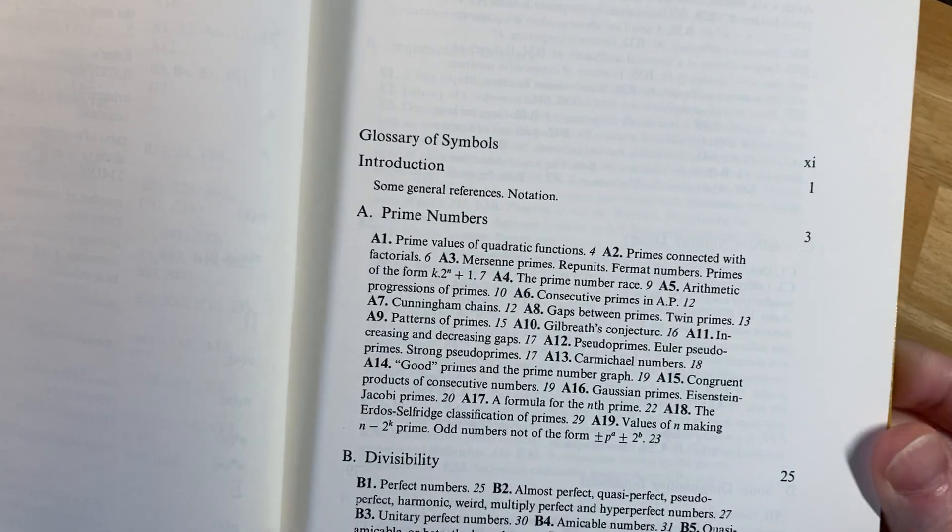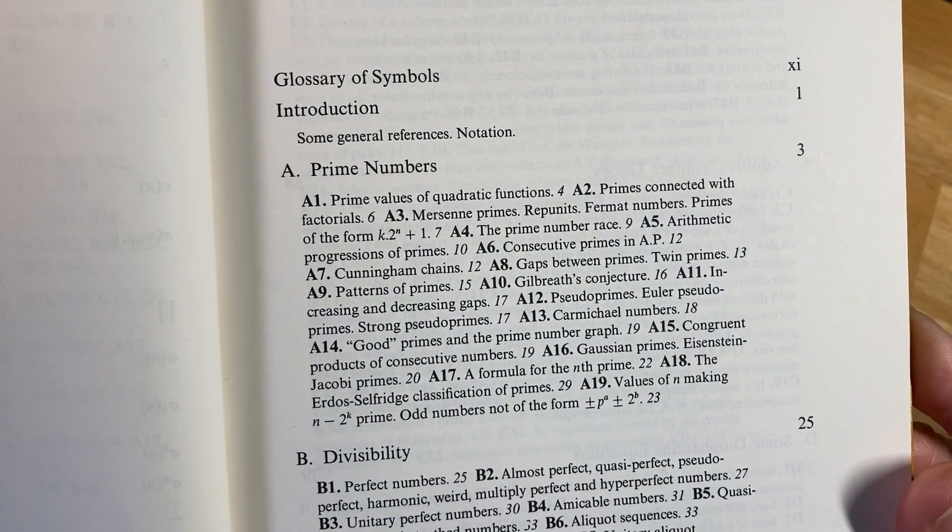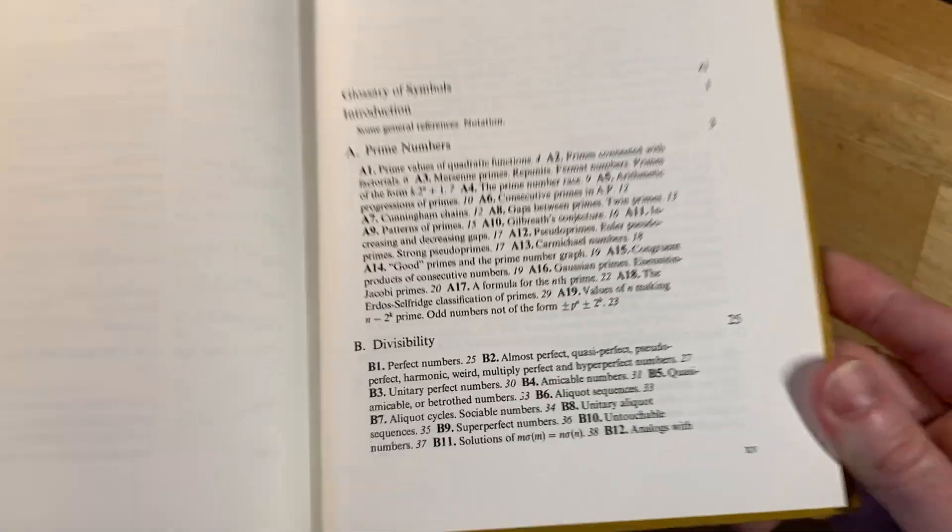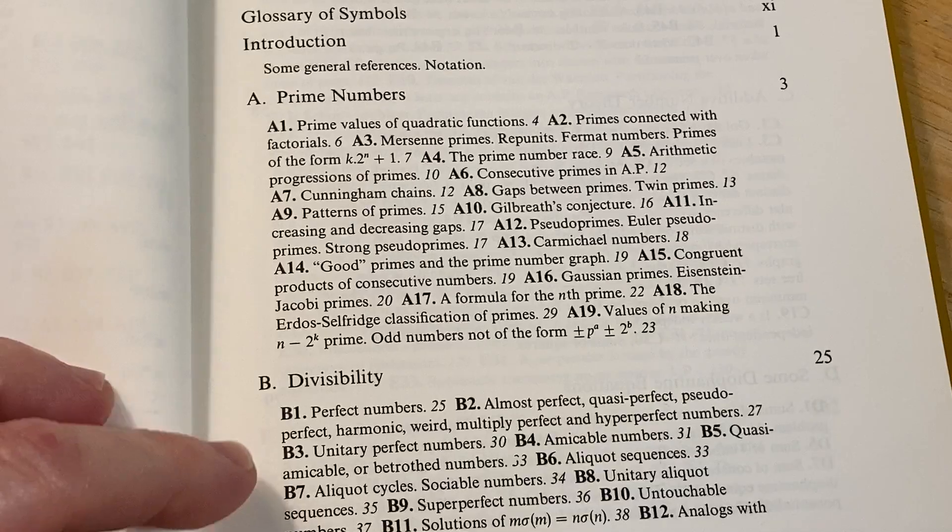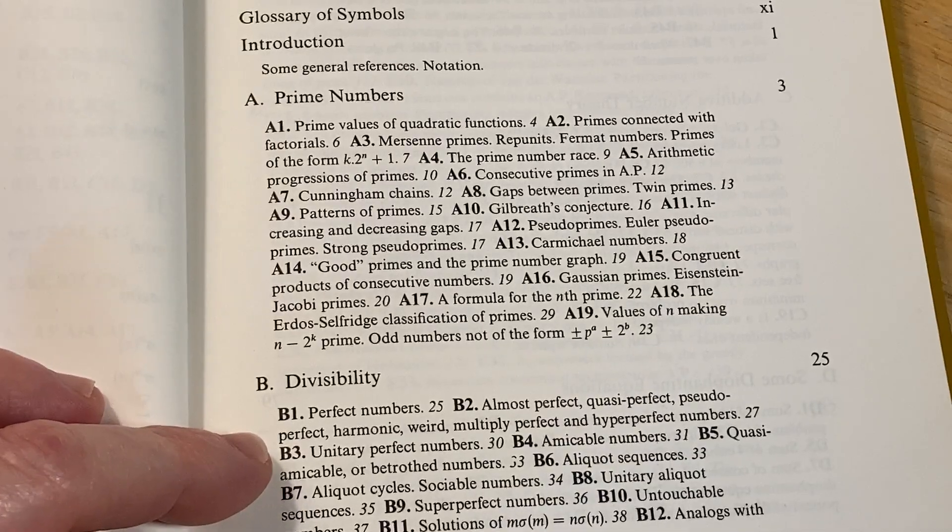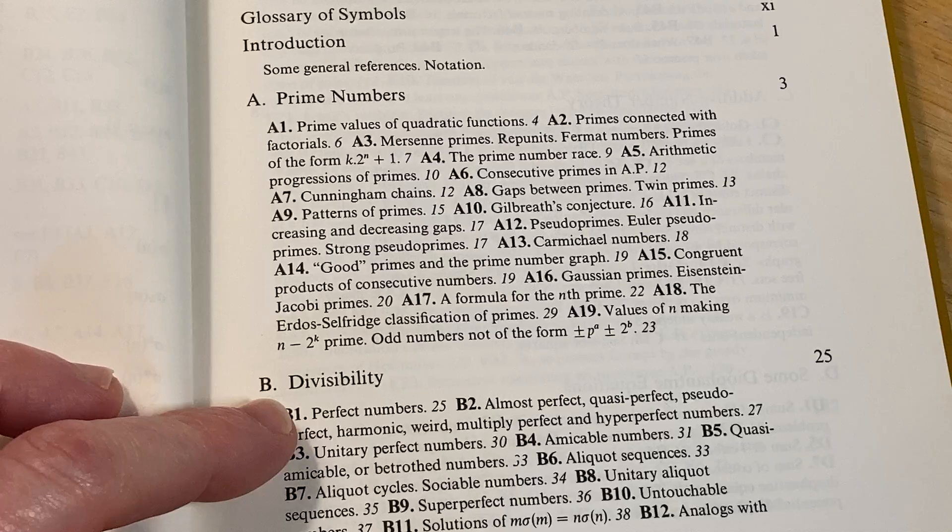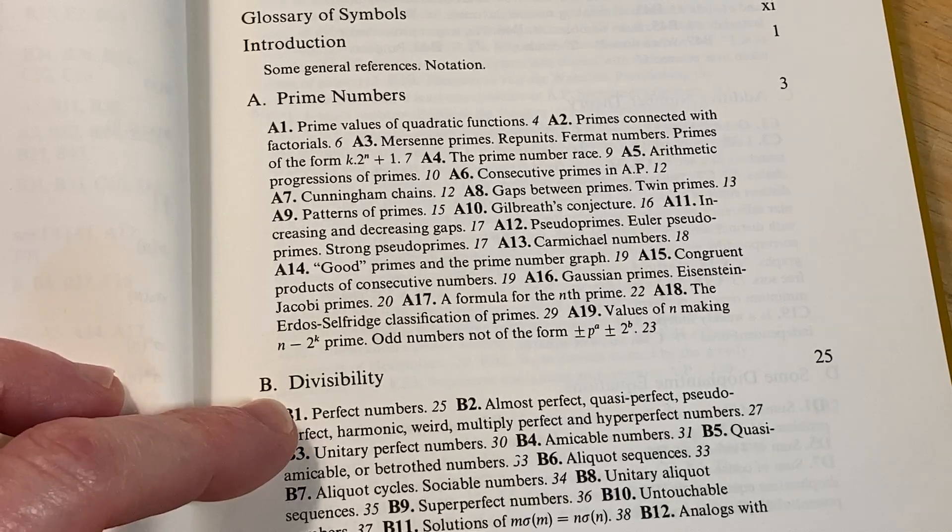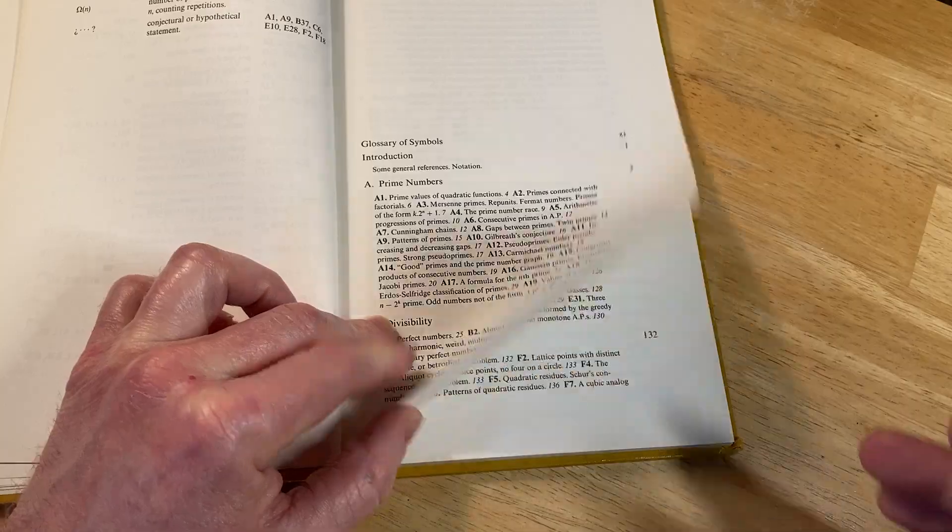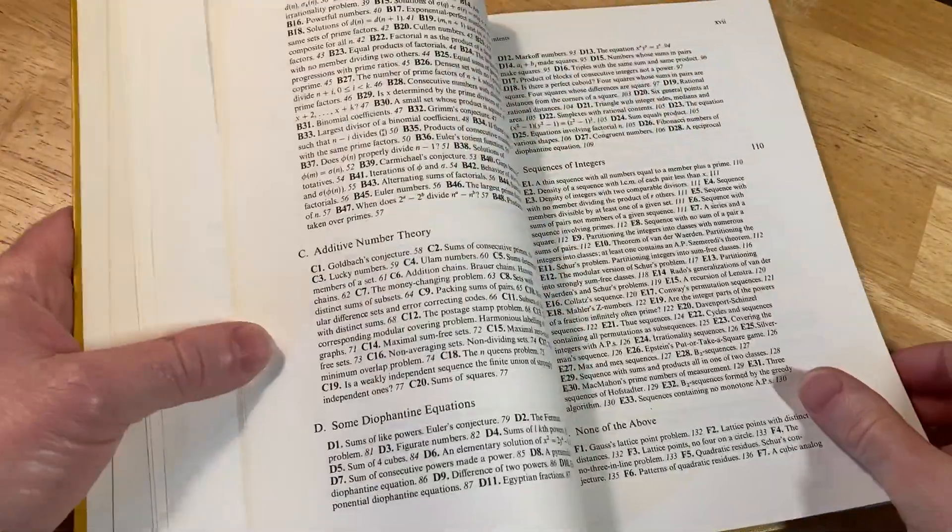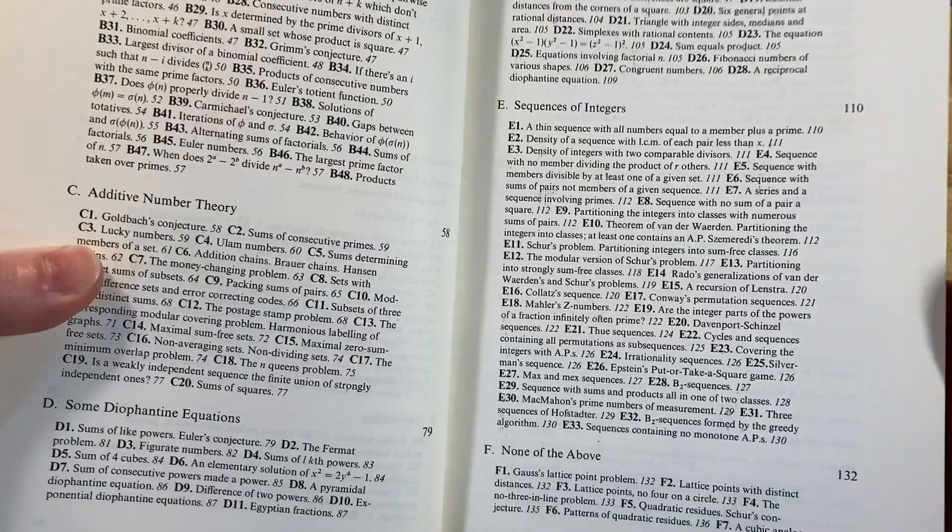And then here are the contents of this book. Prime numbers, divisibility. That's cool. Lots of topics here. Let me just let you look at these topics. This is a pretty cool book. I'll try to remember to leave a link in the description of this video to this book in case you want to check it out. Look at all of these topics. This is so hardcore.